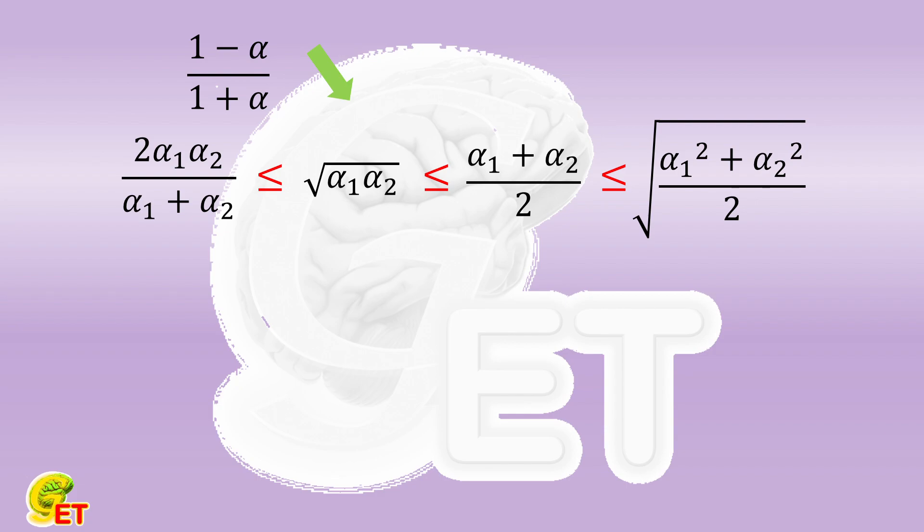So we only need to prove that the inequality corresponding to arithmetic mean is correct. Then the first three inequalities will be all correct.